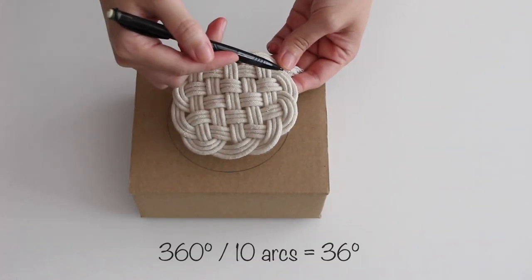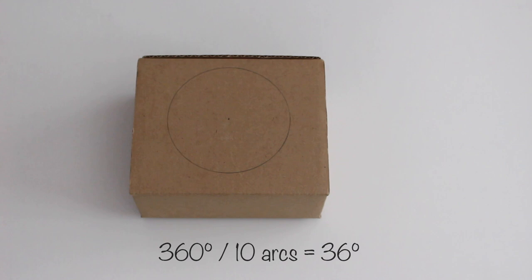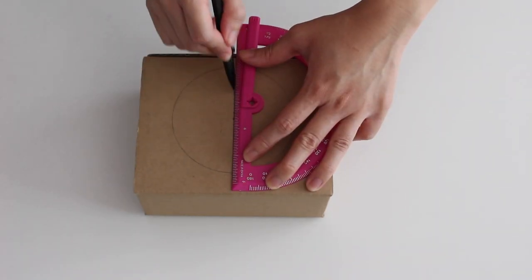Since this knot has 10 arcs, mark the circle at 36 degree angles. I started with a straight line, then mark the angles.